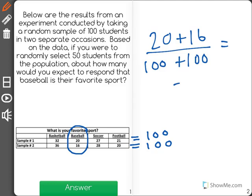So that gives us a ratio of 36 out of 200. But the question is, if we were to take 50 students, how many would say baseball is their favorite sport? So, I'm going to create an equal ratio here.